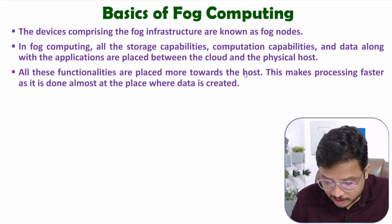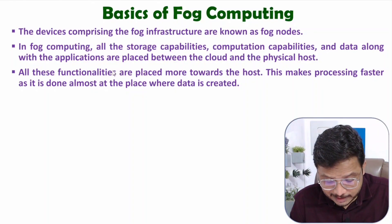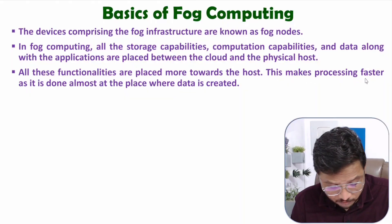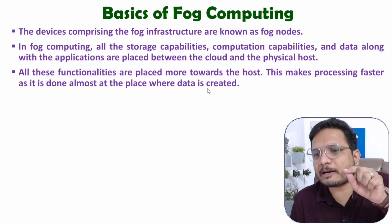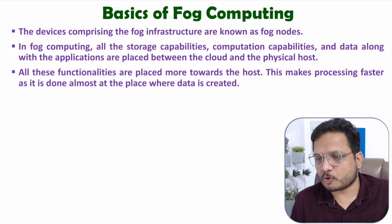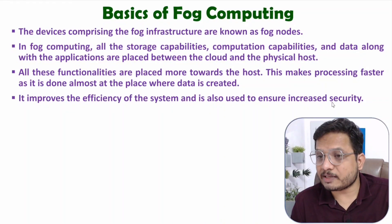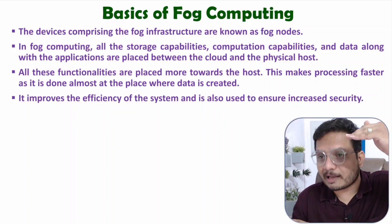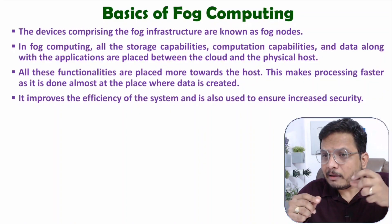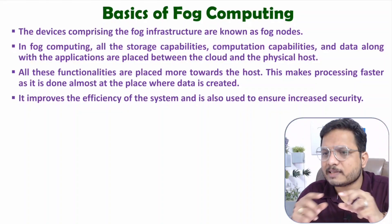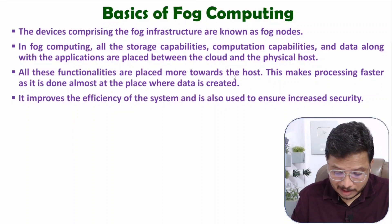All these functionalities are placed more towards the host — the fog node is very near to the N device — which makes processing faster, as it is done almost at the place where data is created. This improves the efficiency of the system and ensures increased security. Frequently accessed data is accessed from the fog node, and least-used data is accessed from the cloud. Security is provided at the fog node, so security concerns are reduced.